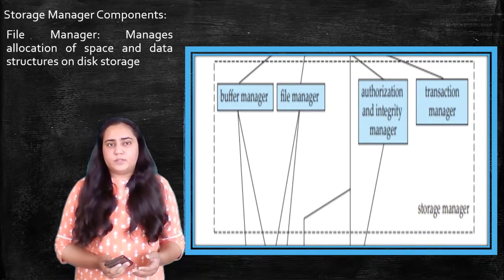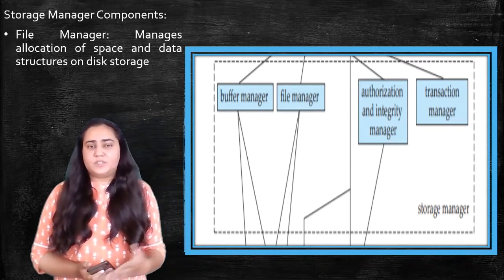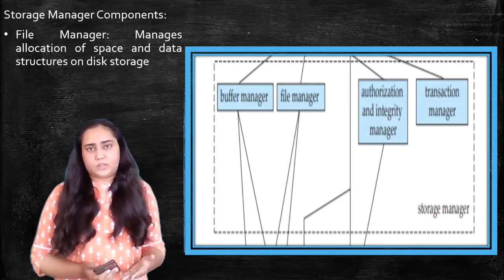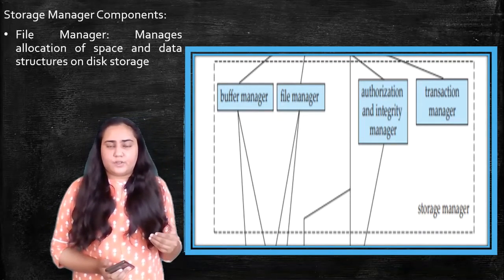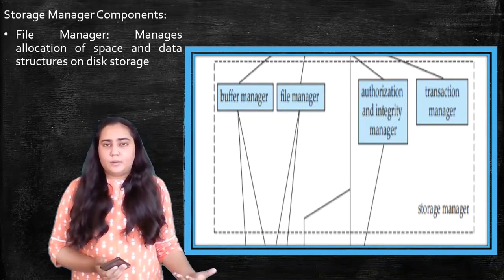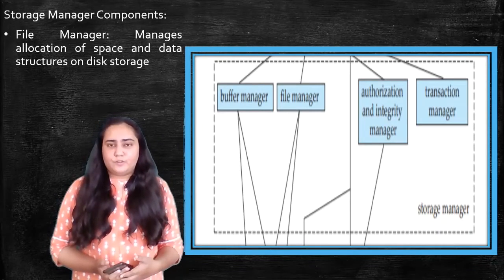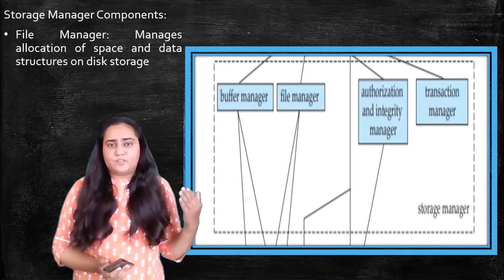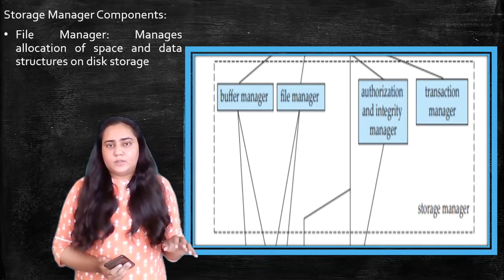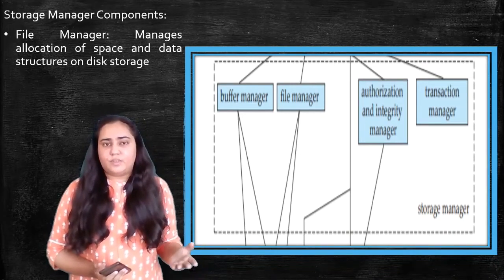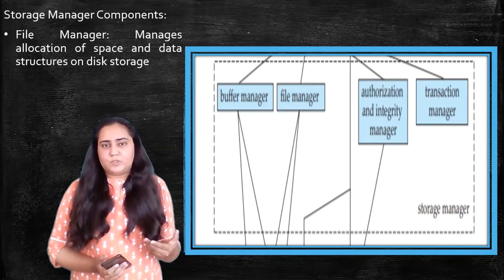The next component that we are going to see is the file manager. File manager manages allocation of space and data structures on the disk storage. This is not basically storing the data for you; this data is stored within the disk. But the file manager gives you a nice way of looking at it. When you open your phone's file manager, you are able to see what types of files you have, what types of videos you have. It doesn't mean it is stored in your phone that way; it is never stored that way in the secondary memory, but you are just able to see it that way.